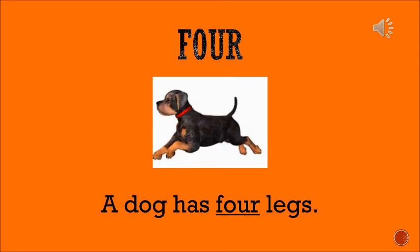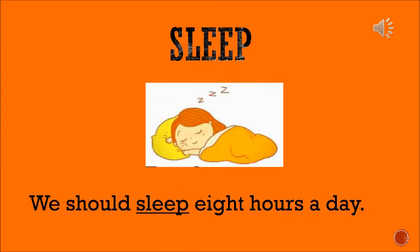Now the next word is 4. 4 is a number, and most animals have 4 legs. Like here I have shown you, a dog has 4 legs. Similarly, you may know many other animals — even a cat has 4 legs. Many things have 4 legs. 4 is a number.